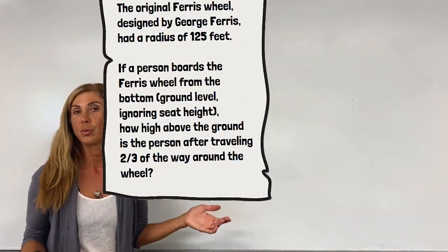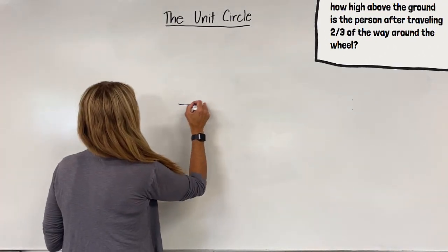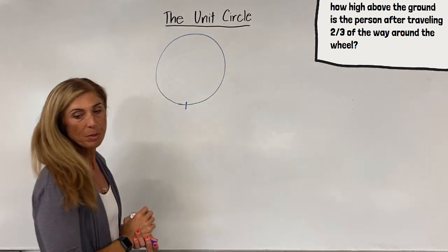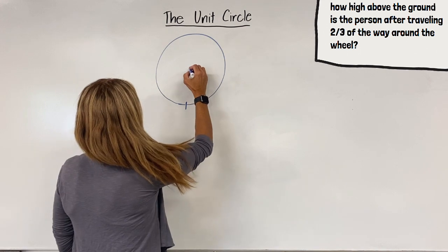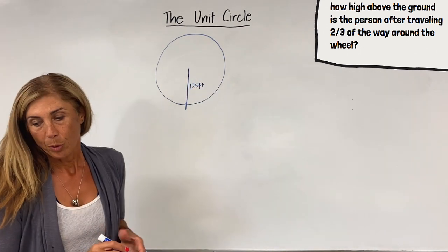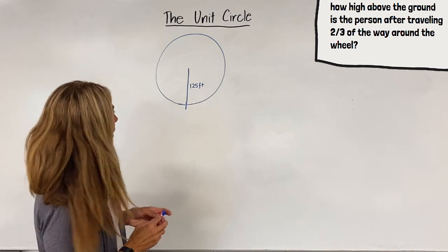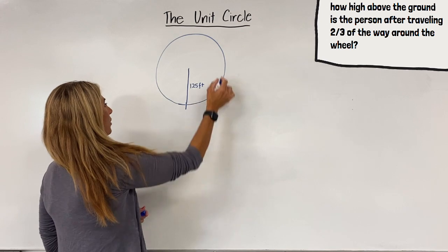First thing we always do in a problem is draw a diagram. So we have our Ferris Wheel, we have the person boarding from the bottom and we know that the radius of the Ferris Wheel is 125 feet. We know the person is going two-thirds of the way around and it really doesn't matter which way, but we're going to go counterclockwise.